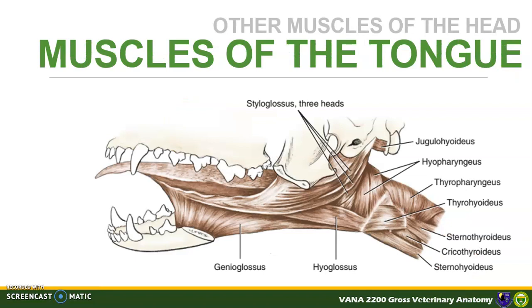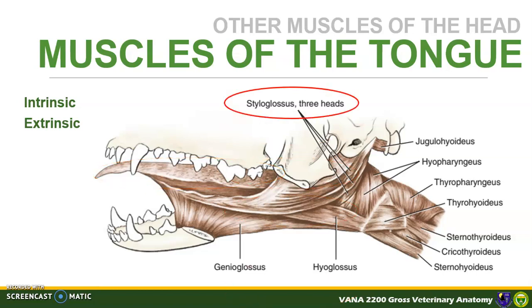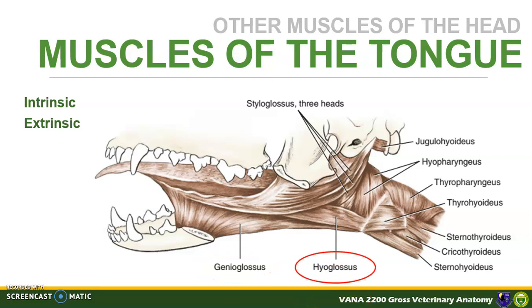The muscles of the tongue can be grouped into intrinsic and extrinsic muscles. The intrinsic muscles are arranged in fascicles that run longitudinally, transversely, and vertically, allowing the tongue to change shape in multiple planes. The extrinsic muscles arise from outside the tongue and include the styloglossus, hyoglossus, and genioglossus. The styloglossus extends from the stylohyoid to the tongue and has three muscle heads that insert at different levels; it draws the tongue caudally. The genioglossus is a thin triangular muscle at the intermandibular space ventral to the tongue — its contraction draws the entire tongue rostrally and depresses it. The hyoglossus is located at the root of the tongue and retracts and depresses the tongue.